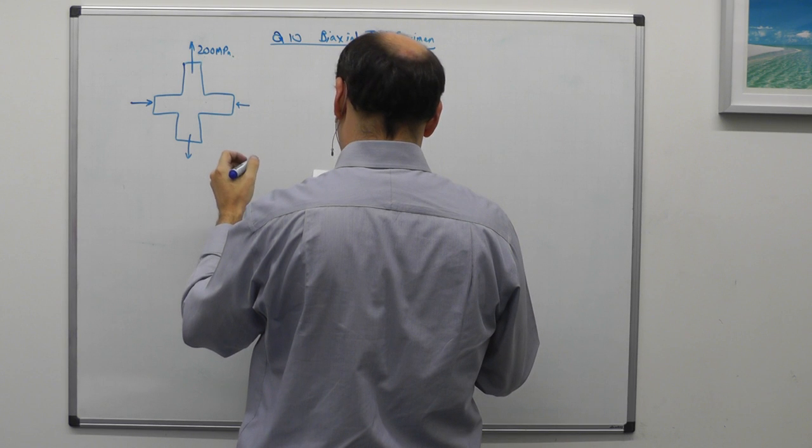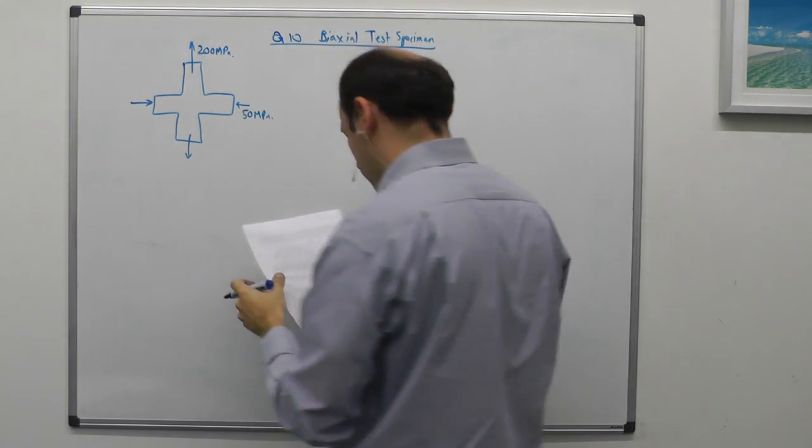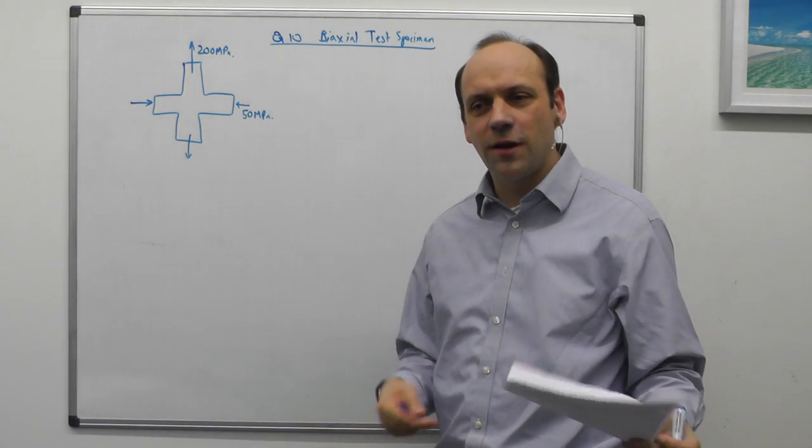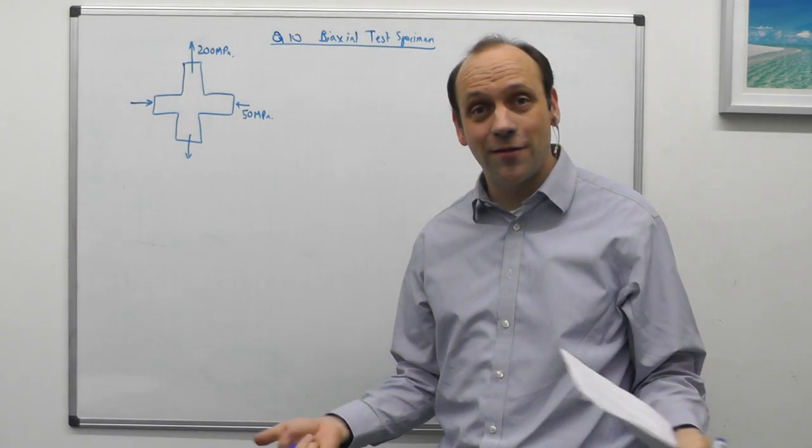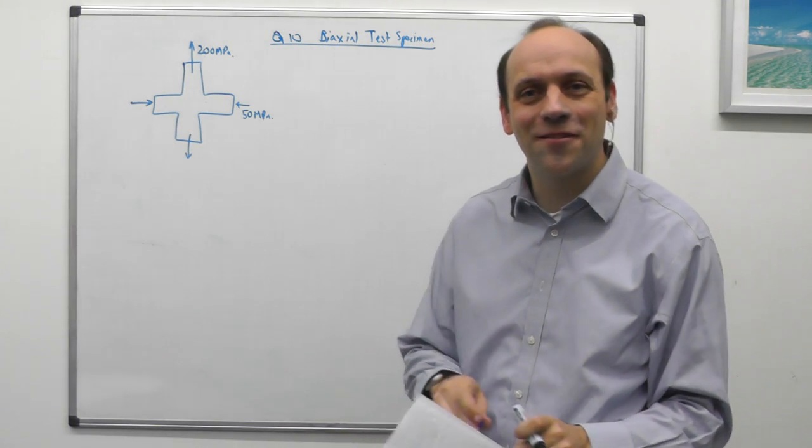And we push on it with a transverse compressive stress of 50 MPa. This is quite commonly done when you're looking at yielding for anisotropic materials and trying to look at yield surfaces, which we'll look at at the end of the course. This is how you check if your yield surface assumptions are correct for the material you're working with.